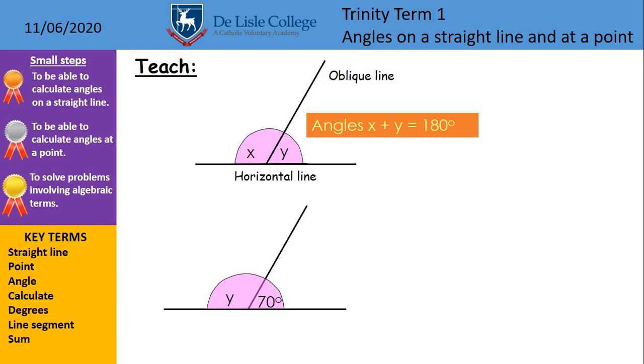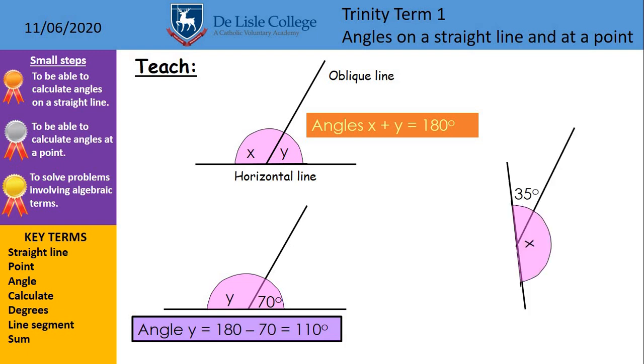So we knew one of these angles was 70, y plus 70 must equal 180 degrees, so you can do 180 minus 70, so angle y would be 110 degrees. Doesn't matter where this line is, we've tilted it onto its side here, but again, 35 plus x will equal 180 degrees, so you can do 180 minus 35, so angle x would be, the remainder there, 145 degrees.